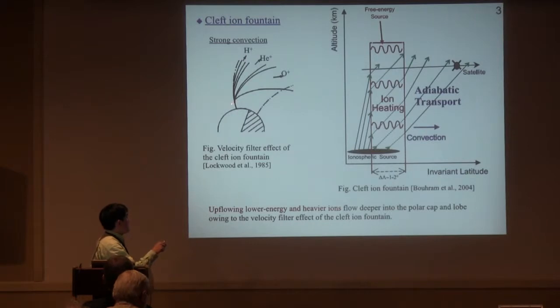On the other hand, slow and heavy ions flow deeper into the polar cap and the lobe region. So, ions flow into the polar cap, owing to the velocity filter effect of the cleft ion fountain.